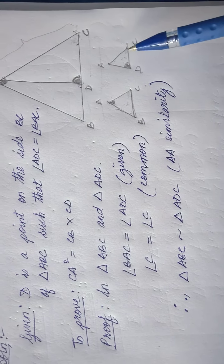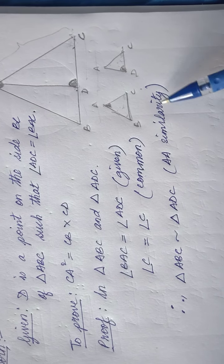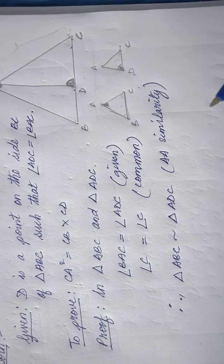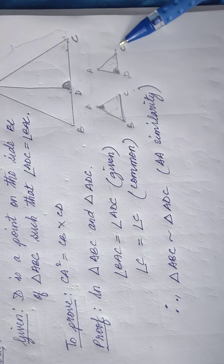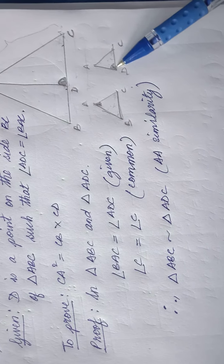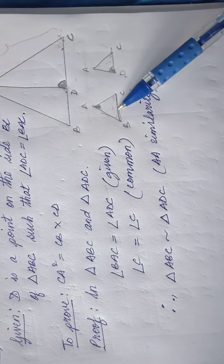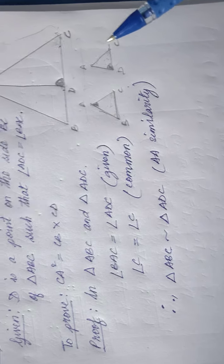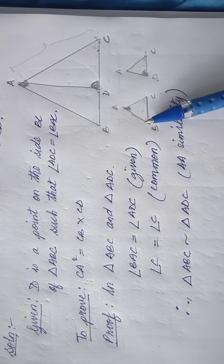Similar is different from congruent. Congruence means the triangles are exactly the same size and shape. Similarity means the same shape but different sizes — for example, both could be equilateral triangles but one is bigger and one is smaller. So they are the same type of triangle but not exactly the same size.